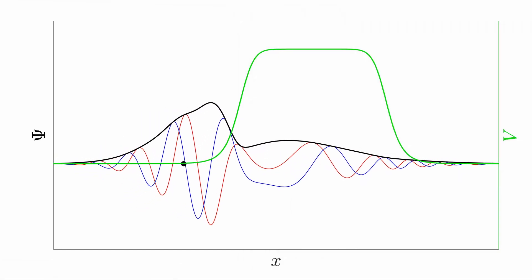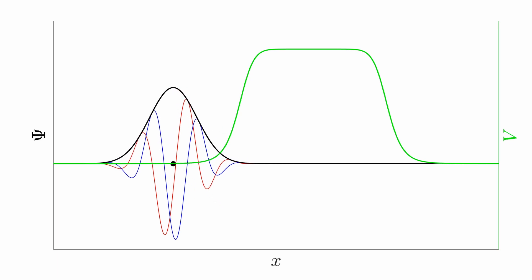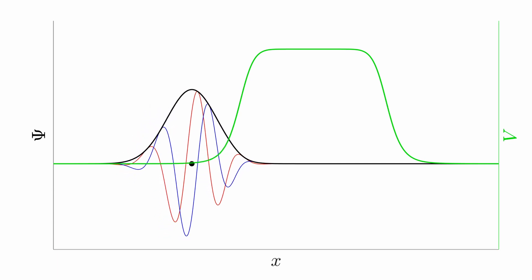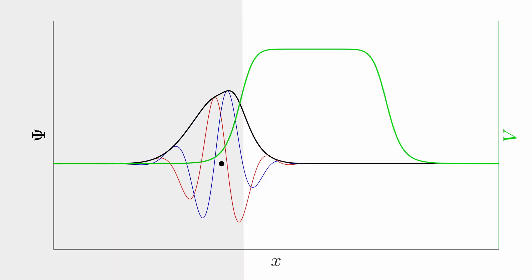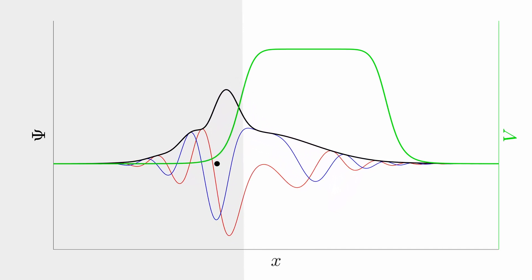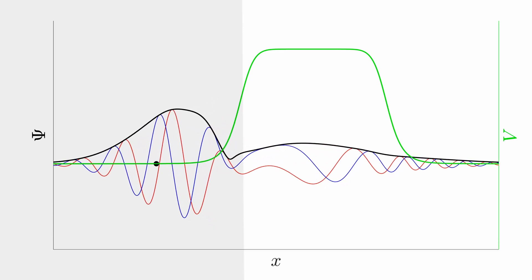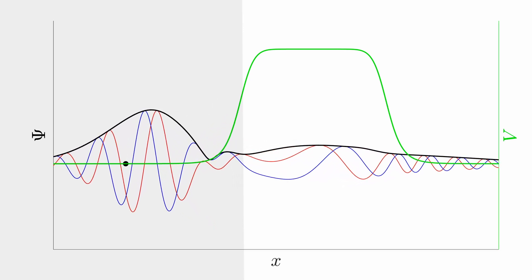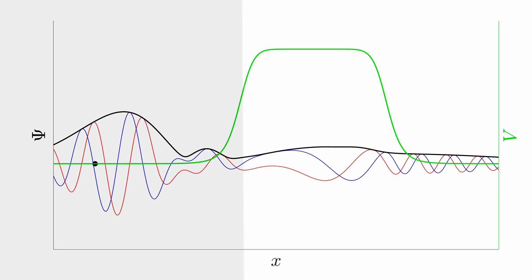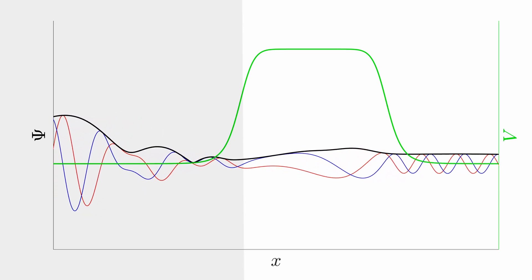Let's rewind the video and play the simulation once more, this time focusing on the right side of the barrier. We can watch as part of the wave packet passes through the barrier, representing the transmitted quantum wave. This phenomenon is known as quantum tunneling and occurs when a quantum particle passes through a potential barrier that would be insurmountable in classical physics.